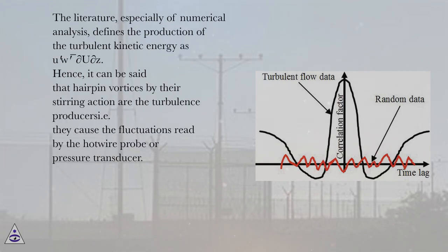The literature, especially of numerical analysis, defines the production of the turbulent kinetic energy as u′w′∂U/∂z. Hence, it can be said that hairpin vortices by their stirring action are the turbulence producers. They cause the fluctuations read by the hotwire probe or pressure transducer.